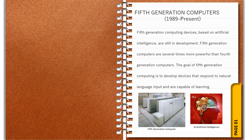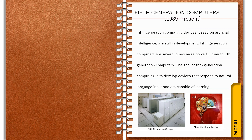Fifth generation computers, from 1989 to the present, are based on artificial intelligence (AI) and are still in development. Artificial intelligence is a branch of computer science concerned with making computers behave like humans. These portable computers are much smaller and more handy than fourth generation computers, and are several times more powerful. They consume less power, are more reliable, and have faster and larger primary and secondary storage. More user-friendly interfaces with multimedia features make these systems easier to learn and use by anyone, including children. The goal of fifth generation computers is to develop devices that respond to natural language input such as English, Hindi, and French, and are capable of learning.